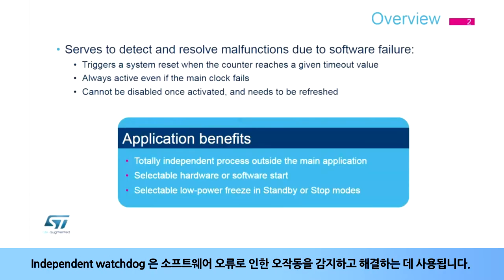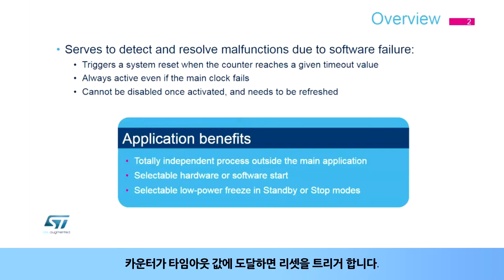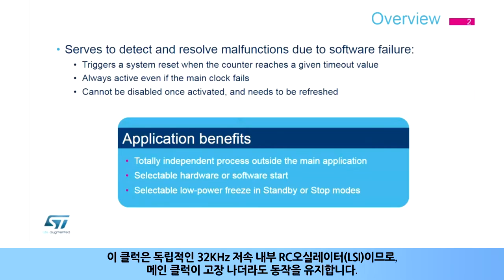The independent watchdog is used to detect and resolve malfunctions due to software failure. It triggers a reset sequence when the counter reaches the timeout value. Since its clock is an independent 32 kHz low-speed internal RC oscillator, or LSI, it remains active even if the main clock fails.